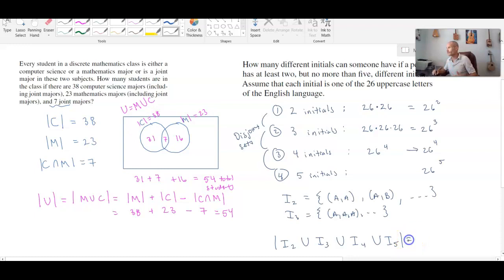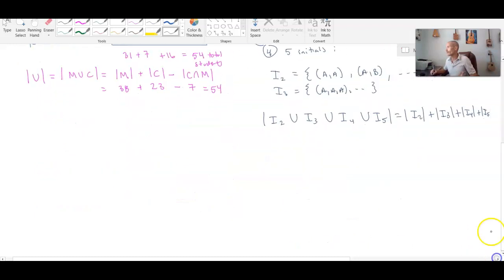And when we do that, that's just going to be the size of I2 plus the size of I3 plus the size of I4 plus the size of I5. We don't need to subtract off any intersections because once again we're dealing with non-overlapping sets. So this will be 26 squared plus 26 cubed plus 26 to the fourth plus 26 to the fifth.